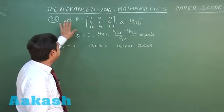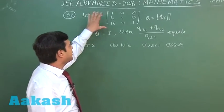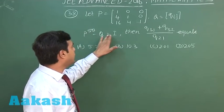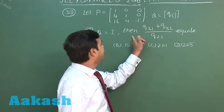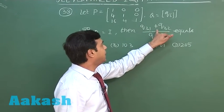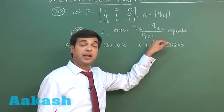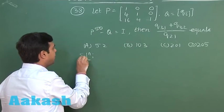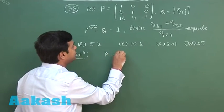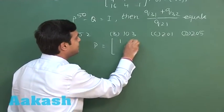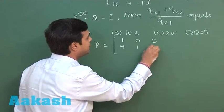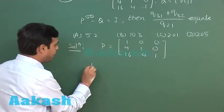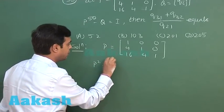Let's move to Question 38. Let P be a 3×3 matrix and Q another 3×3 matrix such that P^50 minus Q equals the identity matrix of order 3. Find Q₃₁ plus Q₃₂ divided by Q₂₁. The matrix P is given as: first row (1, 0, 0), second row (4, 1, 0), third row (16, 4, 1).